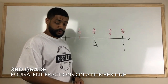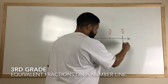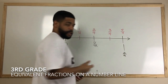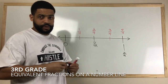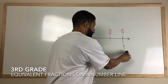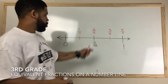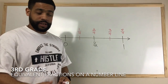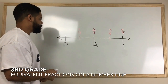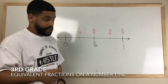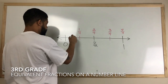This point also represents two out of two — one half. Now let's break it down further. Using green, we're going to take each of these one-fourth pieces and break them down into two more pieces each.